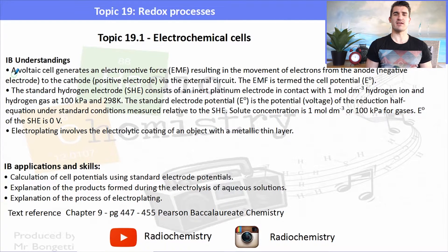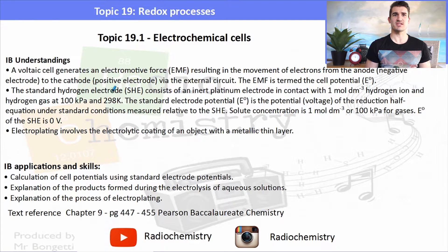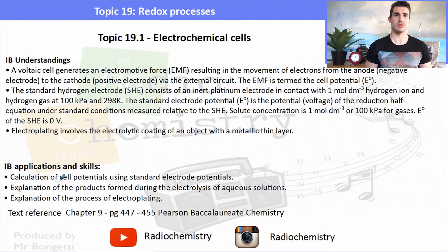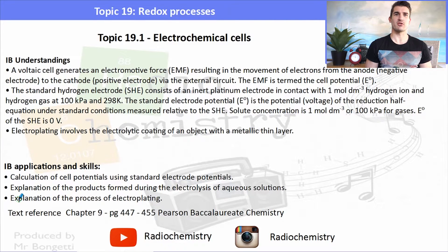The IB understandings and applications focus around a voltaic cell producing an electromotive force, the conditions for the standard hydrogen electrode, and a discussion of electrolysis and electroplating. The applications and skills require us to calculate E° values and work out what we need for an electroplating process.